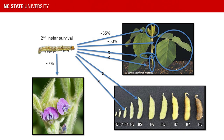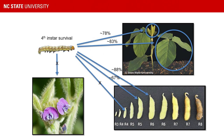That changes as the larvae ages. If you take fourth instars, survival is better: 78% on newly emerged trifoliates, 83% on fully expanded ones. They could now survive on pods — 88% on R6 pods, 67% on R5 pods. They could not complete development on R4 pods or blooms. So as the insect matures, it can tolerate and eat different tissue types, which may be influential depending on growth habit.